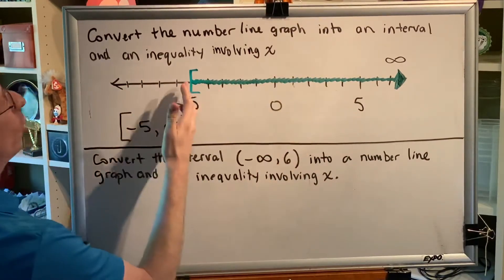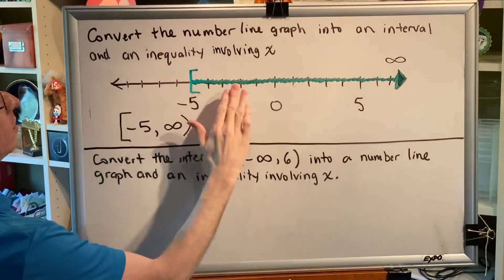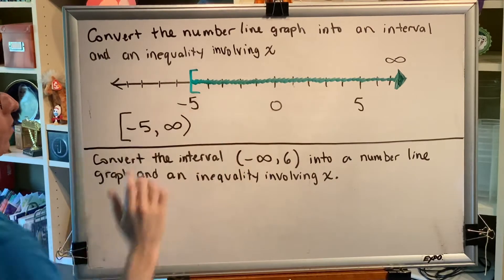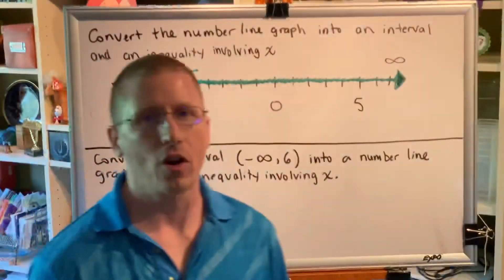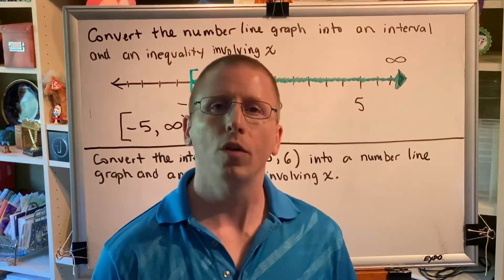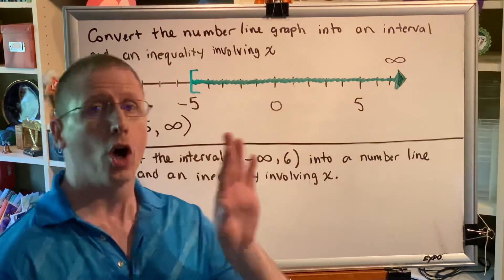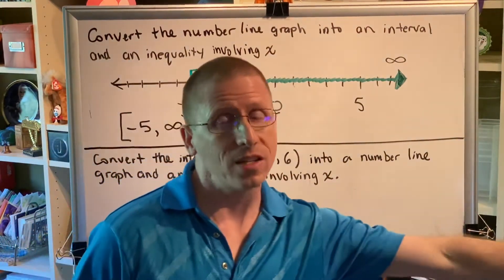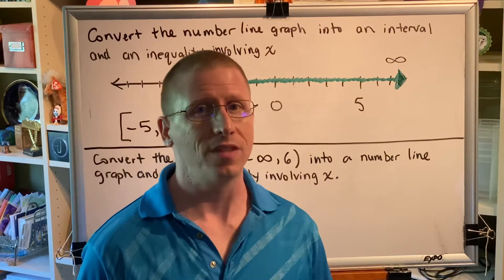As we travel from left to right, we swap from unshaded to shaded at negative 5, so negative 5 is our comparison value. All of the shaded numbers are to the right of negative 5, which means they are all greater than negative 5.